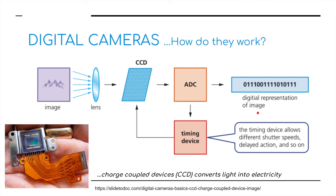So how does it work? Well, inside a digital camera we have something called a charge-coupled device, and this converts light into electricity. It's a tiny little device inside your phone or mobile camera. The image is passed through a lens and captured on the charge-coupled device. We then use an ADC, an analog-to-digital converter, to convert this analog image into a digital representation — basically binary. We've also got timing devices which enable us to change shutter speed and delay the action.